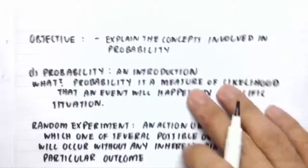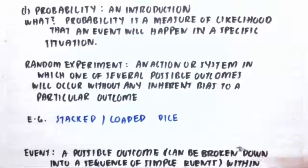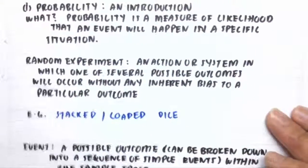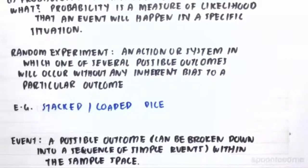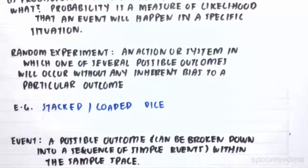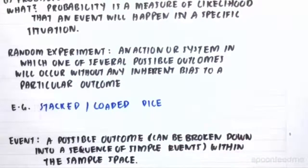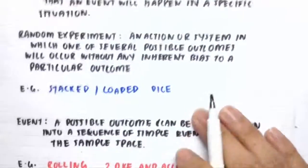Next, we define what an event is. An event is a possible outcome, and it can be broken down into a sequence of simple events that make up that outcome within the sample space. For example, rolling two dice and accumulating a total of 10 — rolling a dice twice and accumulating a total of 10.